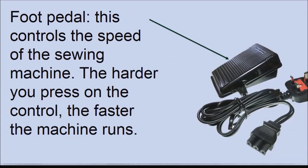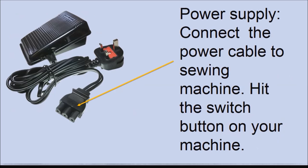Foot pedal — this controls the speed of the sewing machine. The harder you press the pedal, the faster your sewing machine runs. Press your pedal with cushion. Power supply — connect the power cable of your sewing machine into your machine and connect the other end to your power socket on the wall. Hit the switch button on your sewing machine and your sewing machine is ready to be driven.